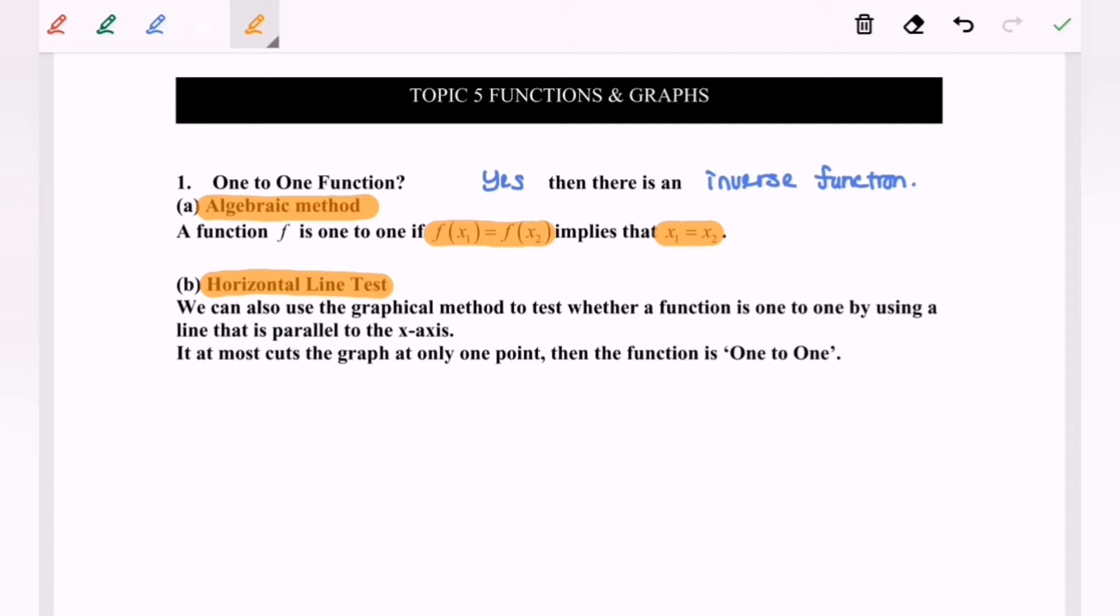If at most, it cuts the graph at only one point, then the function is said to be one-to-one. I repeat, cut the graph at only one point, then the function is said to be one-to-one function.